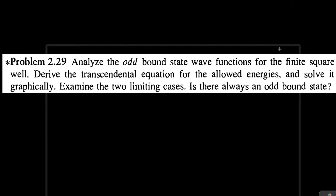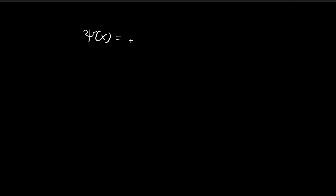We're going to analyze the bound states of the finite square well where ψ(x) is an odd function. In the book, Griffiths' demonstration treated ψ(x) as an even function. From problem 2.1, we know that ψ(x) for a given energy level can either be an even function or an odd function.